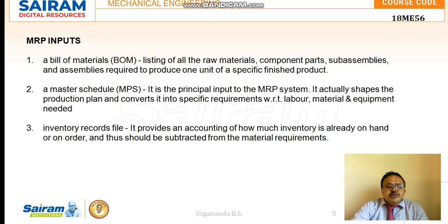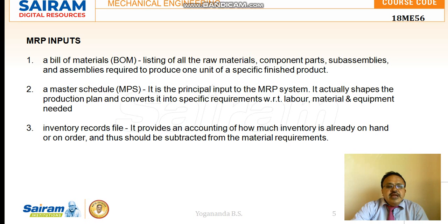The Master Production Schedule, which we already studied in Module 4 covering aggregate planning, is the principal input to the MRP system. It shapes the entire production plan and converts it into specific requirements — what labor is required, how many raw materials and spare parts are needed, and the equipment required to convert raw materials into the finished product. It schedules the entire production on a weekly or monthly plan.